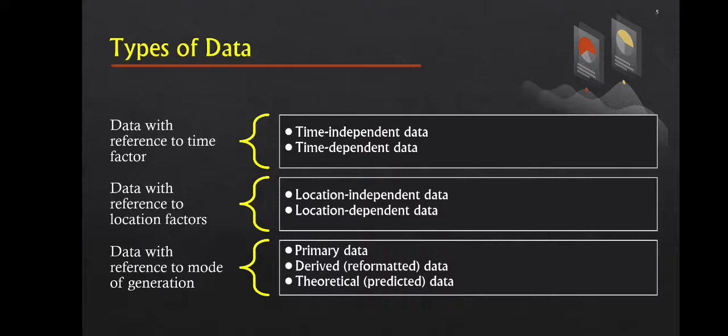The first type is data with reference to time factor. It has two categories: time-independent data and time-dependent data. Time-independent data refers to data which can be measured repeatedly. Examples include data in geosciences and astronomy such as geological structures, rocks, fixed stars, and many more.